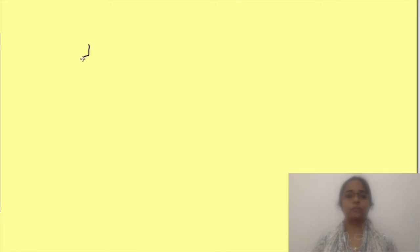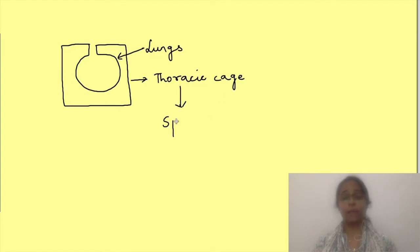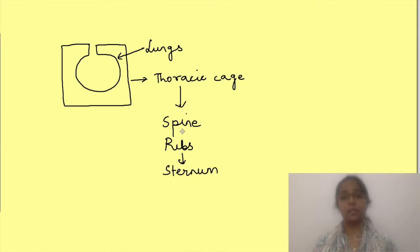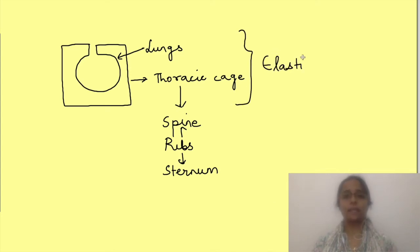With this concept, let's try to understand the mechanics of respiration. The lungs are housed inside the thoracic cage, which is formed posteriorly by the spine, and anteriorly and laterally by the rib cage with ribs attached to the sternum anteriorly and to the spine posteriorly. Both the lungs and thoracic cage are elastic structures — they can expand and recoil back to their respective resting positions.